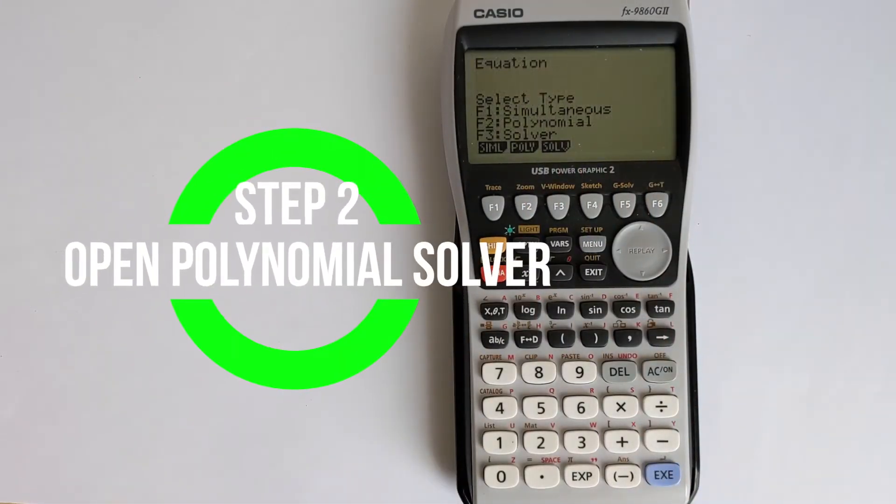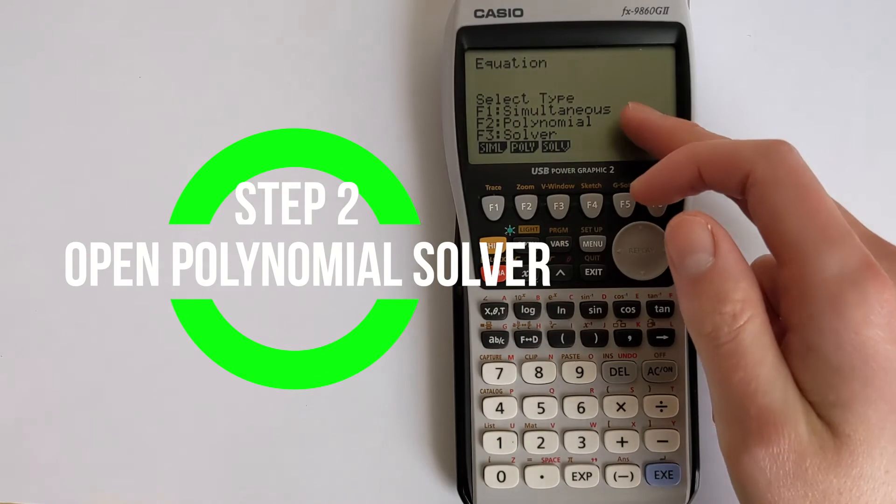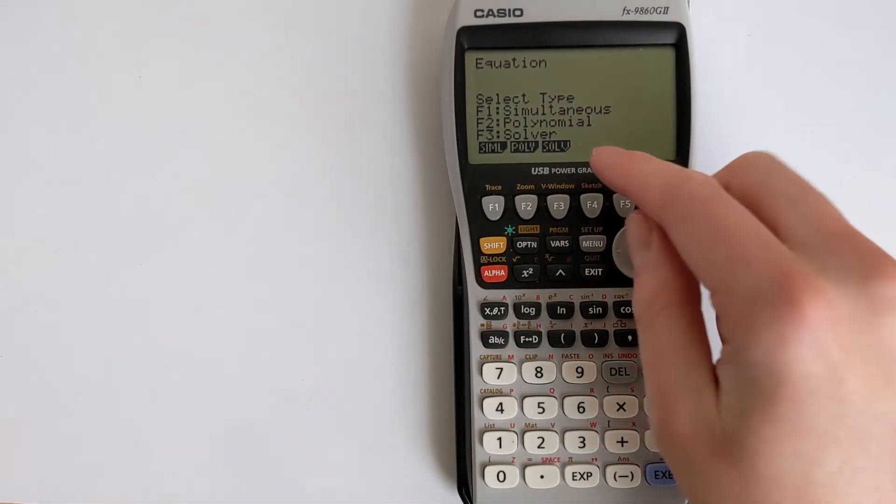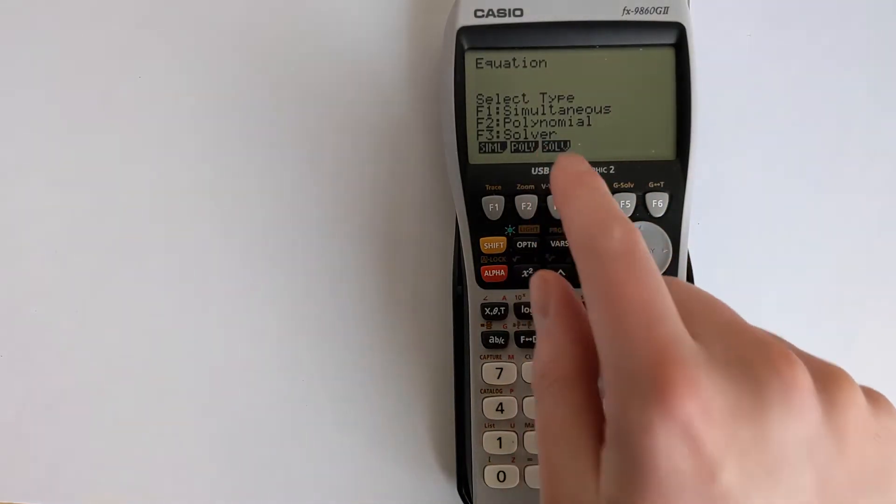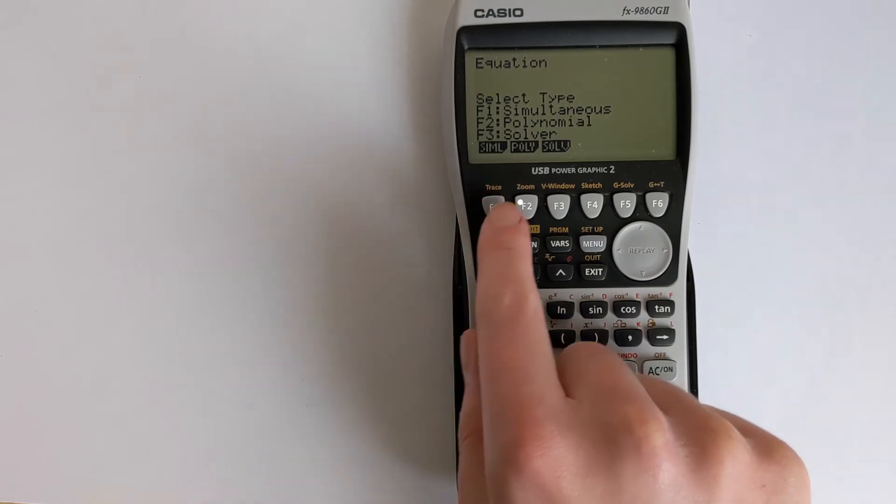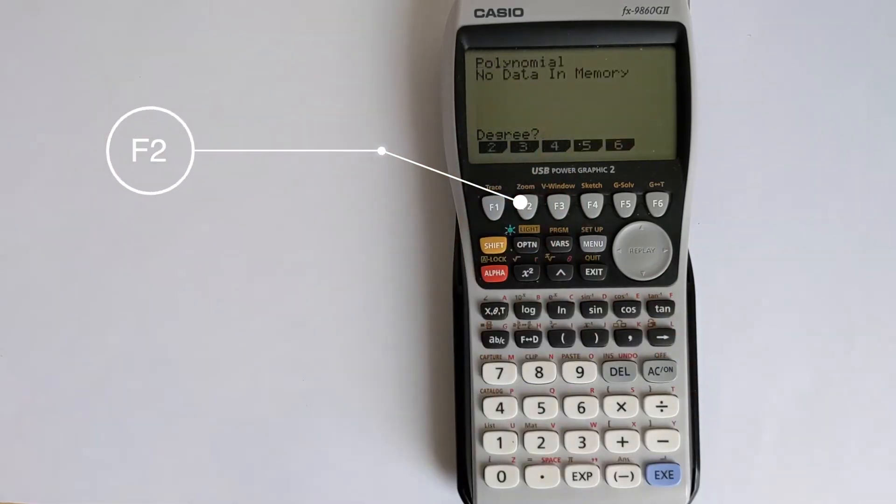Now, we need to open the polynomial solver. So option 1 will let us solve simultaneous equations. Option 2 is for quadratics and polynomials, and option 3 is for a different solver for solving other equations. So let's choose F2 for the polynomial solver.